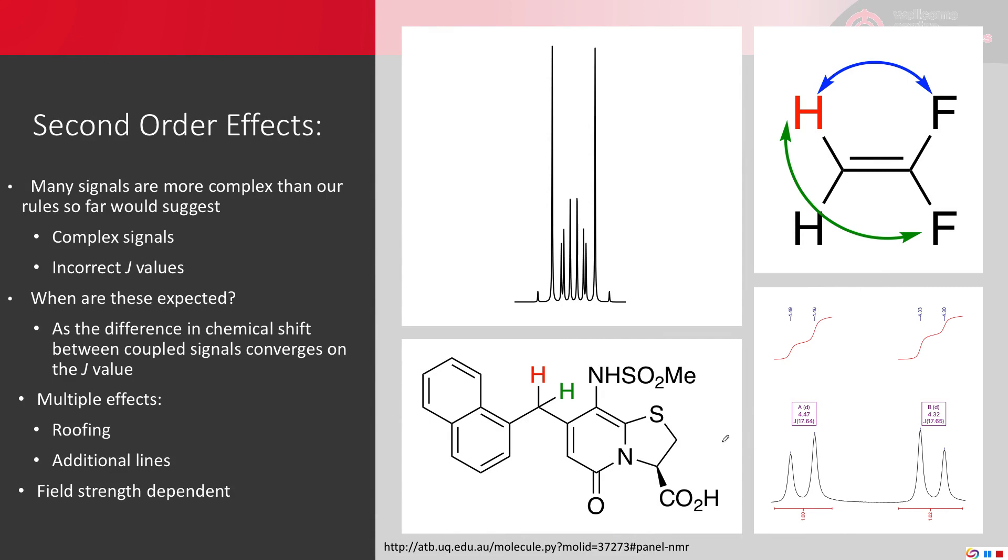Now, often these are due to a phenomena called strong coupling, which causes second order effects. Now, this is seen when the difference in chemical shift between coupled signals converges on the J value. And typical effects are roofing and additional lines. So here is our difluoroethylene spectra. As you can see, it is a lot more complicated than the nice singlet that you might expect to see.